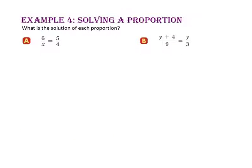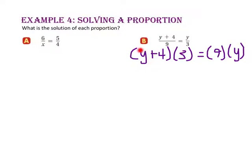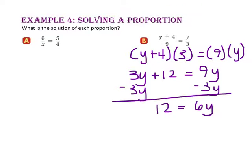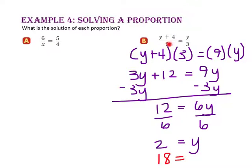In part B, again we will use the cross product property, starting by multiplying the extremes: y plus 4 times 3, and setting that equal to the product of the means, 9 times y. Use the distributive property: 3 times y is 3y, and 3 times 4 is 12, equals 9y. Subtract 3y from both sides and 12 equals 6y. Now divide both sides by 6, and 2 equals y. To check, substitute 2 in for y: 2 plus 4 equals 6, times 3 is 18, and 9 times 2 is also 18. So we know we are correct.